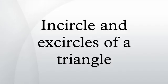An excircle or escribed circle of the triangle is a circle lying outside the triangle, tangent to one of its sides and tangent to the extensions of the other two. Every triangle has three distinct excircles, each tangent to one of the triangle's sides.